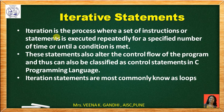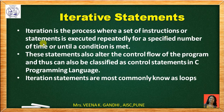Now first we will learn what do you mean by iterative statements. Iteration is the process where a set of instructions or set of statements is executed repeatedly for a specified number of times, or until some condition is satisfied. These statements alter the control flow of the program, thus can be classified as control statements in C. Iteration statements are commonly known as loops in C.